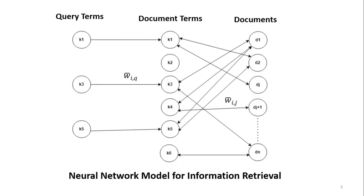This is the diagrammatic representation showing query terms, document terms, and documents. Initially the process starts from the query terms, but after the first iteration there is a continuous transition between document terms and documents. In that case, new documents get found and the source structure gets built.